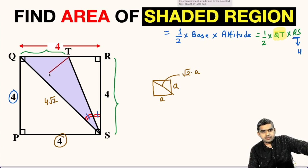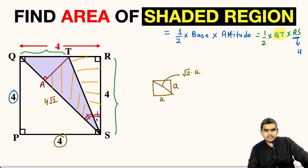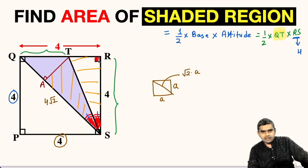We will now do a construction: drop a perpendicular from T to QS, and let this point be A. Now let's focus on two triangles. It is given that one angle equals another, and angle R is 90°. By construction, angle A is also 90°.